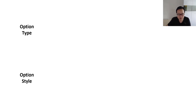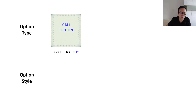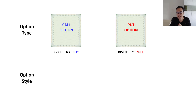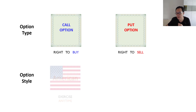A call option is an option that gives you the right to buy, while a put option gives you the right to sell. The difference is very clear-cut between the two — one is to buy and the other is to sell.